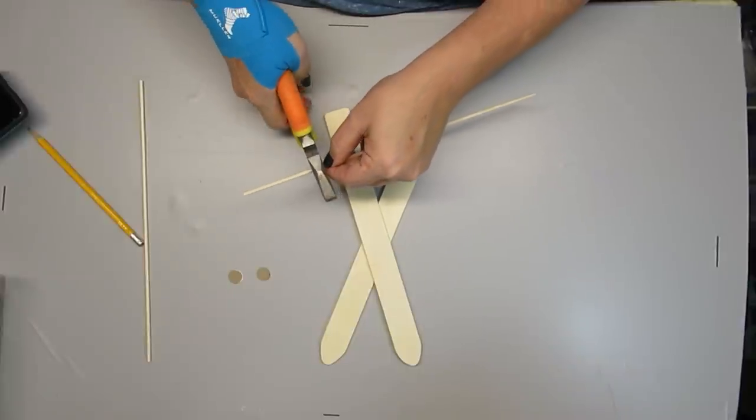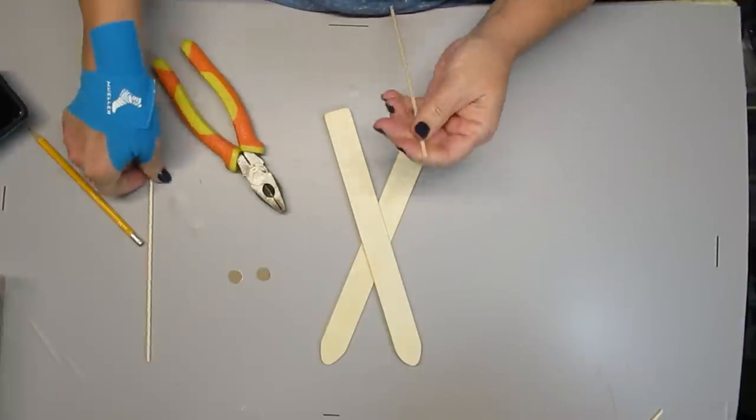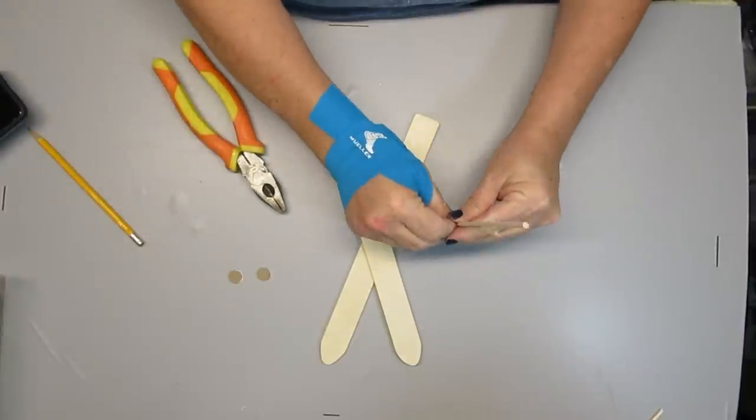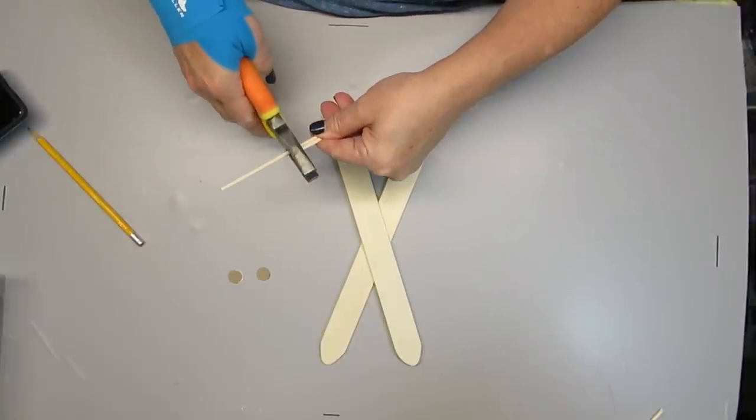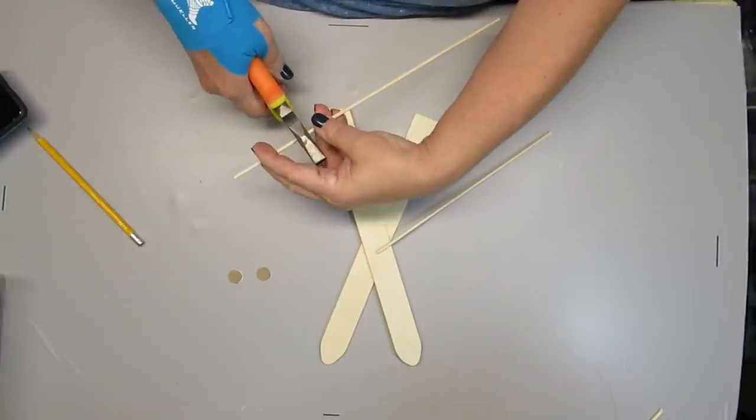I've measured out the length that I want the ski poles to be, and I'm using that same pliers to just trim them down. I will sand down the cut edge a little bit just to make sure that it's nice and flat.